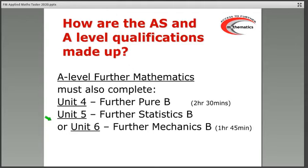If you do choose to do a full A-level in further maths, then your choice as to whether you do the statistics or the mechanics will be determined largely by what course you wish to do at university. Mechanics is a must if you want to do physics or an engineering type degree, and statistics is recommended if you wish to do geography, biology, or any social science.